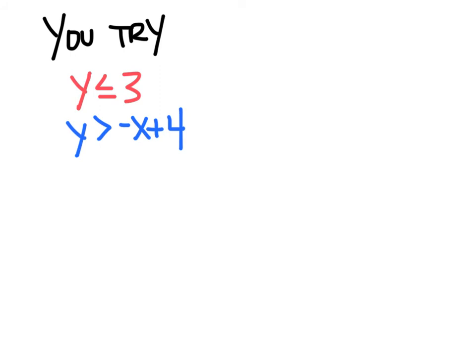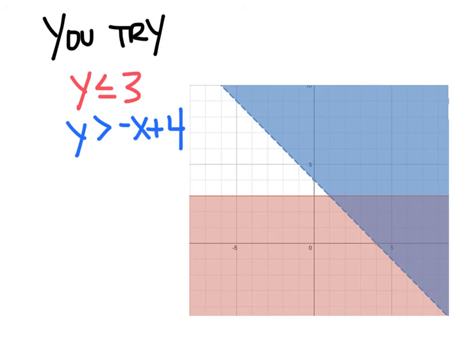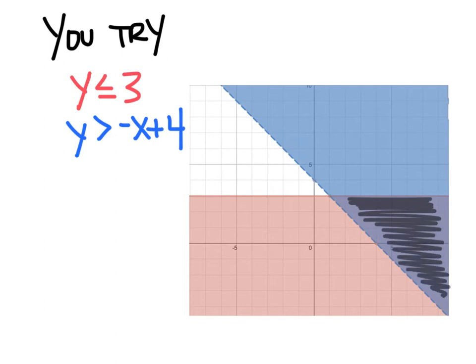Now it's time for you to try a problem on your own. Pause the video and graph y is less than or equal to 3 and y is greater than negative x plus 4. The line y is less than or equal to 3 is just y equals 3. Put a solid line because it's less than or equal to, and since y is less than, shade below. For y is greater than negative x plus 4, go up to 4, go down 1 over 1 for a slope of negative 1. Y is greater than, so shade above. This region where the shadings overlap is the solution.